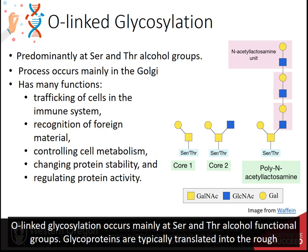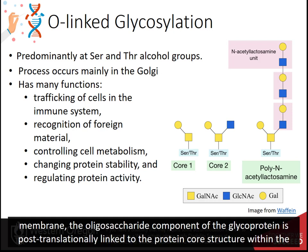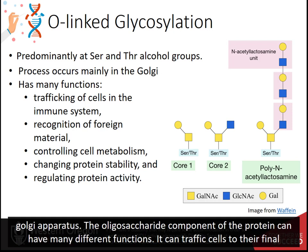Glycoproteins are typically translated into the rough endoplasmic reticulum, where they can be processed and packaged for transport to the plasma membrane. En route to the plasma membrane, the oligosaccharide component of the glycoprotein is post-translationally linked to the protein core structure within the Golgi apparatus.